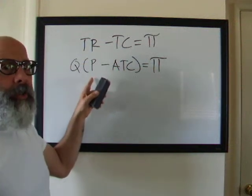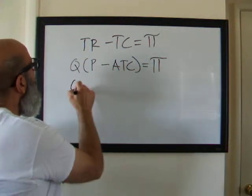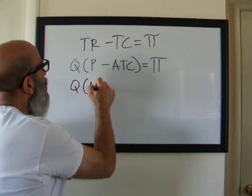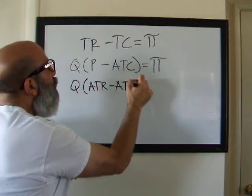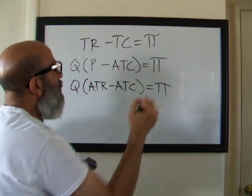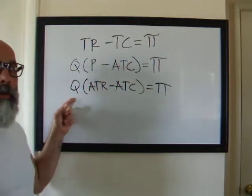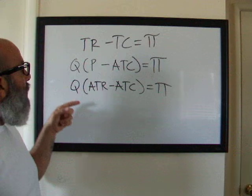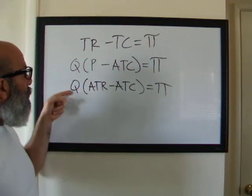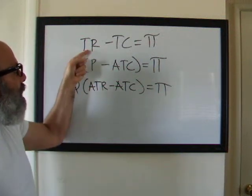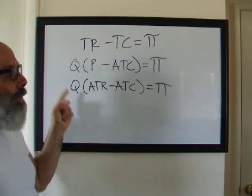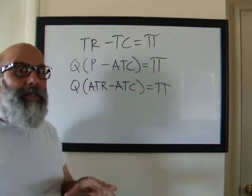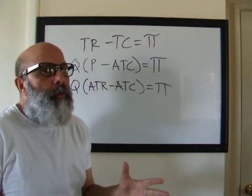Sometimes you can substitute this P for an ATR, and this really makes the equation much easier to understand. So using the distributive property of math, if I distribute this quantity through, Q times ATR is TR, Q times ATC is TC. So it really is TR minus TC, just in a little bit different format.